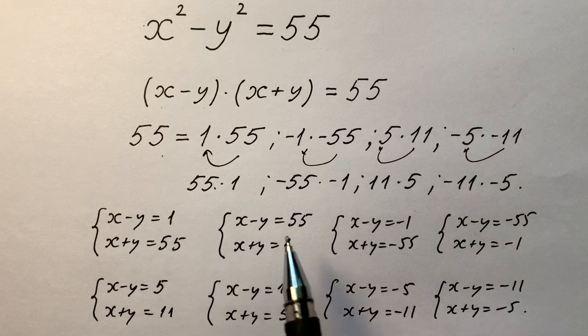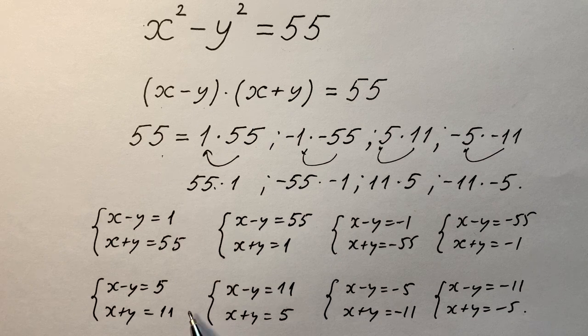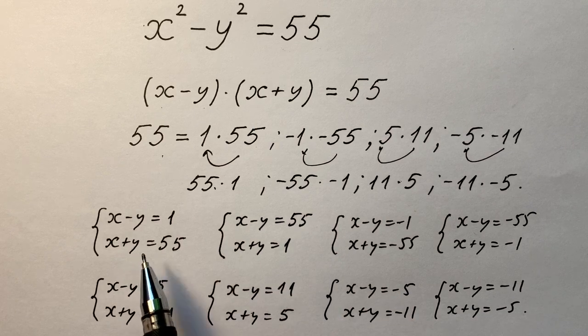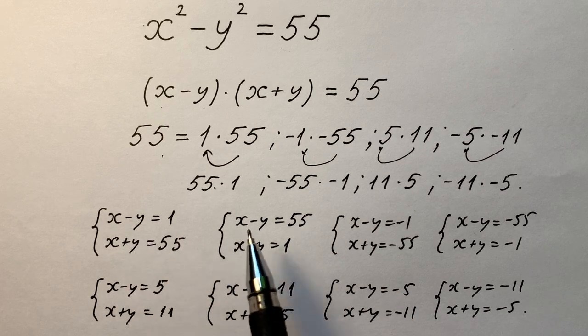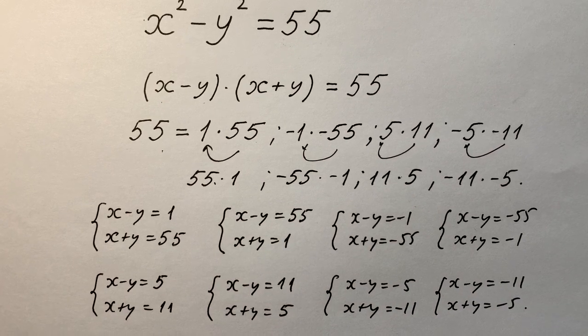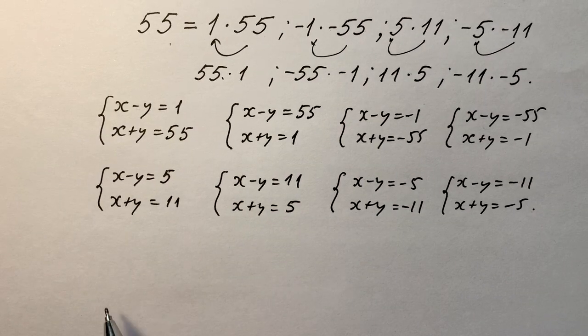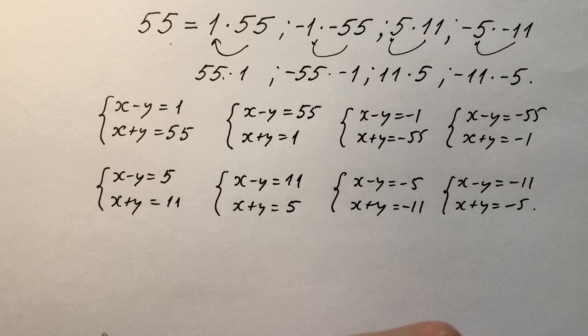Look at this bunch of systems. Eight systems in one problem. Have you ever seen that before? Of course, even a six-year-old can solve each of these systems. They are too simple. So we can in a moment write the answers. You understand that there are eight pairs of answers from any systems.